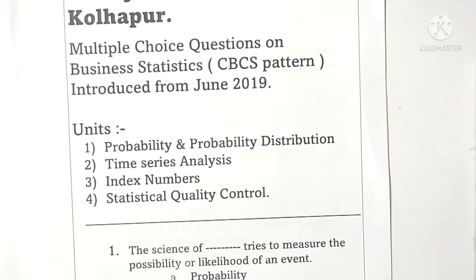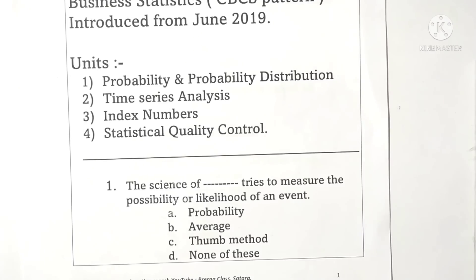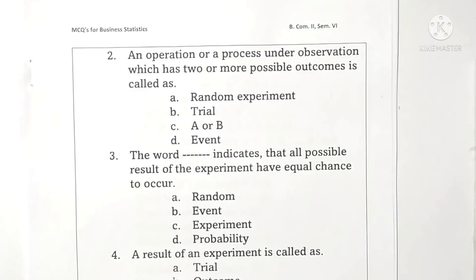Question 1: The science of probability tries to measure the possibility or likelihood of an event. Option A is correct. Question 2: An operation or process under observation which has two or more possible outcomes is called a random experiment or a trial. Both options A and B are correct, therefore option C is correct.